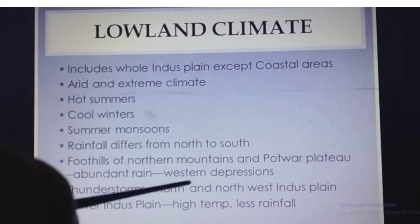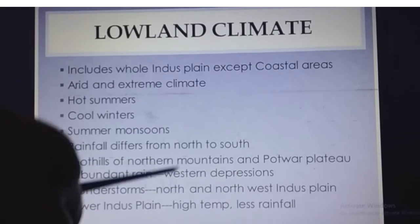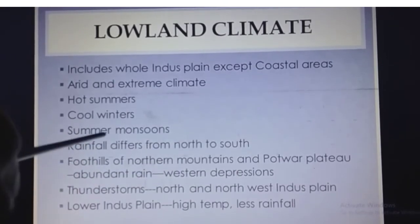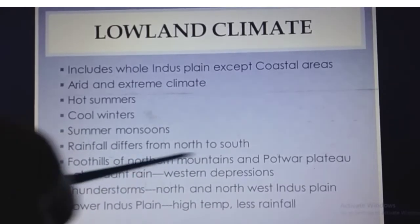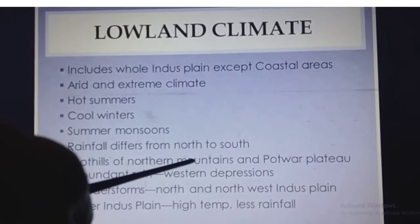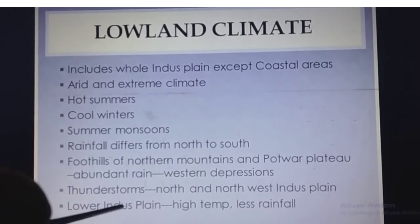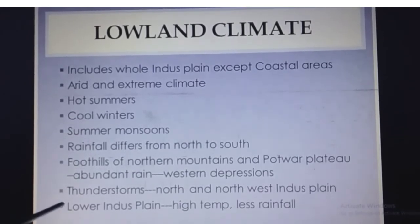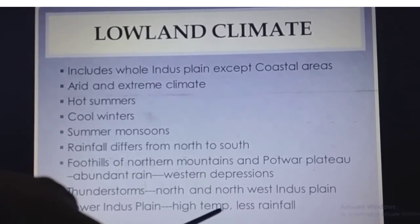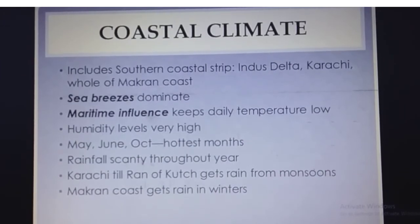The foothills of the northern mountains and the Potohar Plateau receive abundant rainfall from western depressions. Western depressions are winds coming from the western side that cross Afghanistan and Iran; these winds bring abundant rainfall to the Potohar Plateau and the northern mountains. This is another commonly asked exam question. Additionally, this land experiences thunderstorms in the north and northwest. In the lower Indus Plain, temperatures are very high and rainfall decreases as you move from north to south.